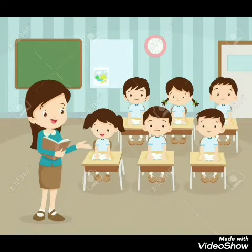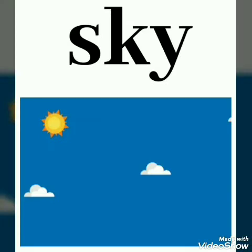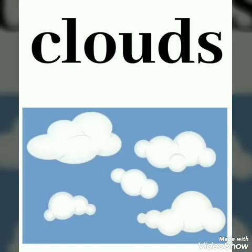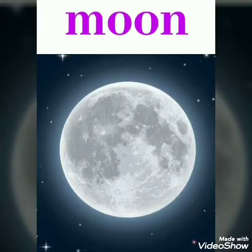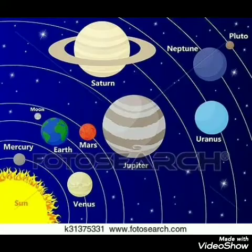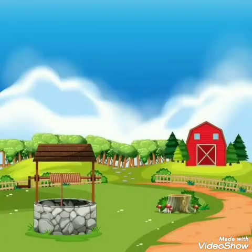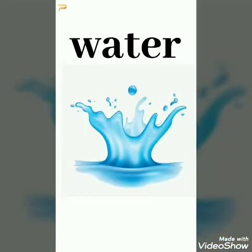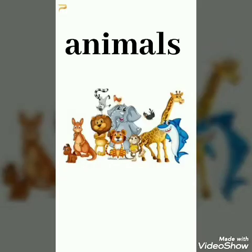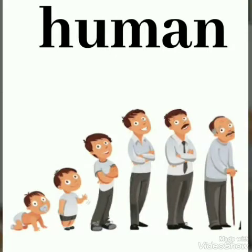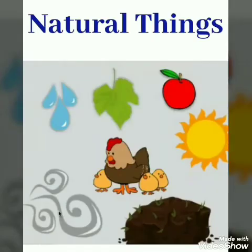We can see a few more examples of natural things: sky, clouds, sun, moon, stars, rain, rainbow, solar system, land, water, mountain, plants, animals, human. These are all created by nature, so we can call them natural things. I hope that you understand the topic.